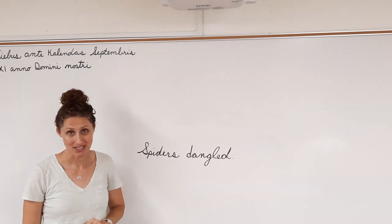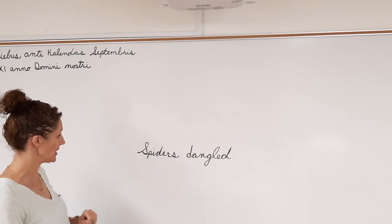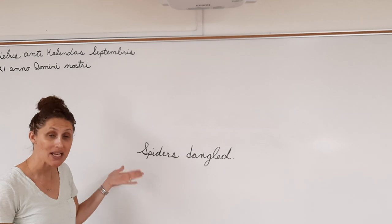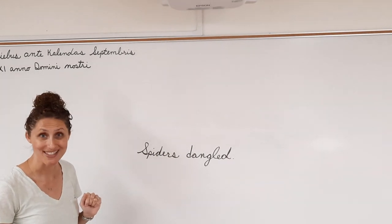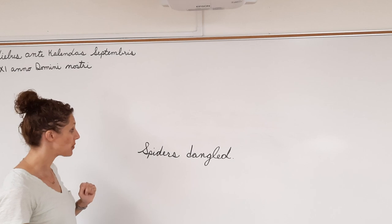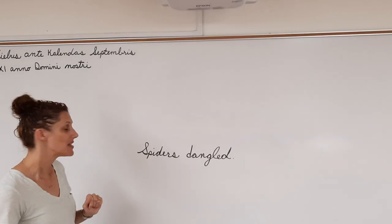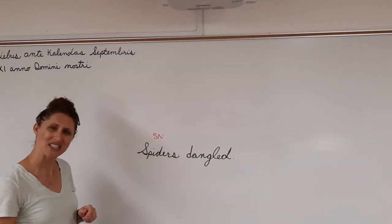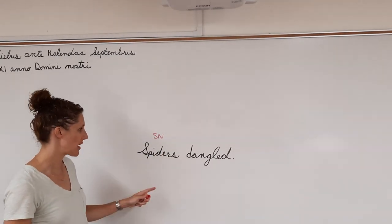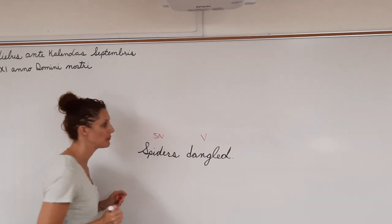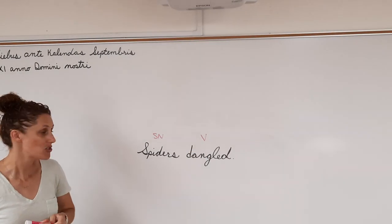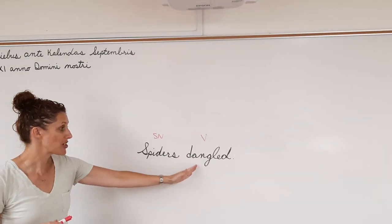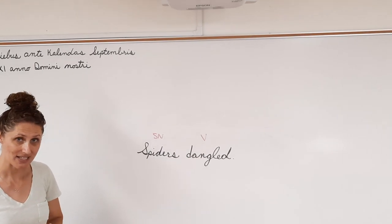So let's start with a very short sentence. We begin by reading the sentence. Spiders dangled. Then we ask a series of questions to help us identify what the words are in the sentence. So spiders dangled. What dangled? Spiders. Subject noun. What is being said about spiders? Spiders dangled. Verb. So that's a short and sweet sentence. But you can see that through question and answer, that's how we classify a sentence.